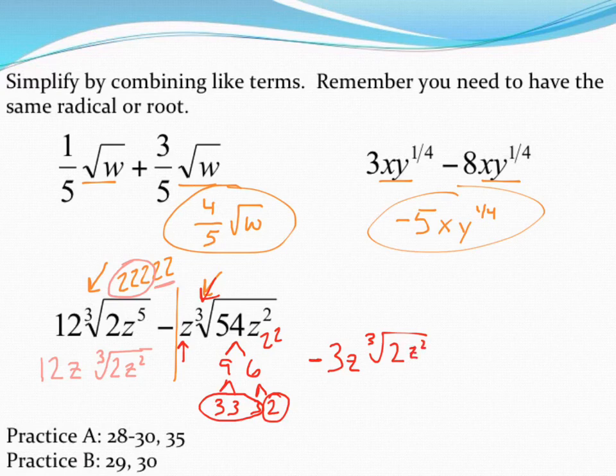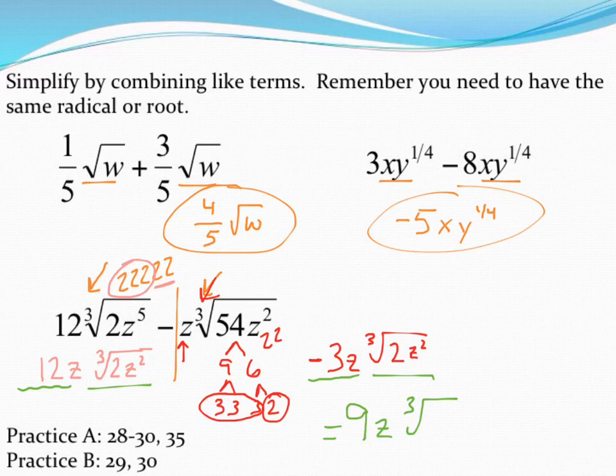Lo and behold, look at that. We've got the same exact thing inside the radical at this point. I've got the cube root of 2z squared and the cube root of 2z squared. Because those are identical, I'm allowed to add or subtract the coefficients, the numbers in front. This time, I've got 12z minus 3z. They were nice enough to even give us like terms in front as well. 12z minus 3z leaves us with 9z as our coefficient. And then, as always, when we're adding or subtracting, our radical stays the same. So 9z times the cube root of 2z squared.